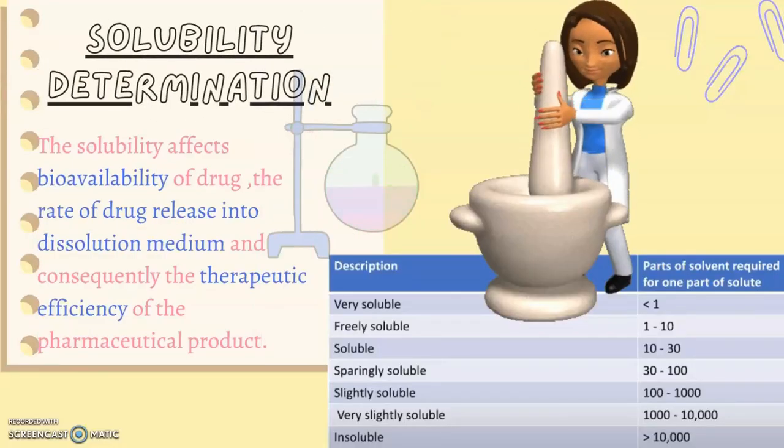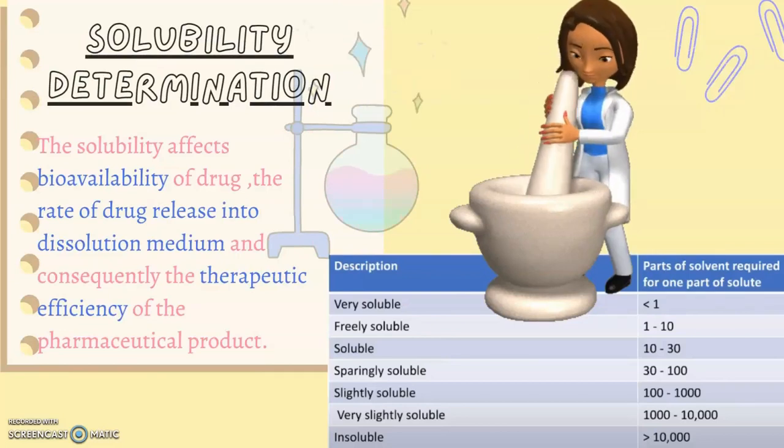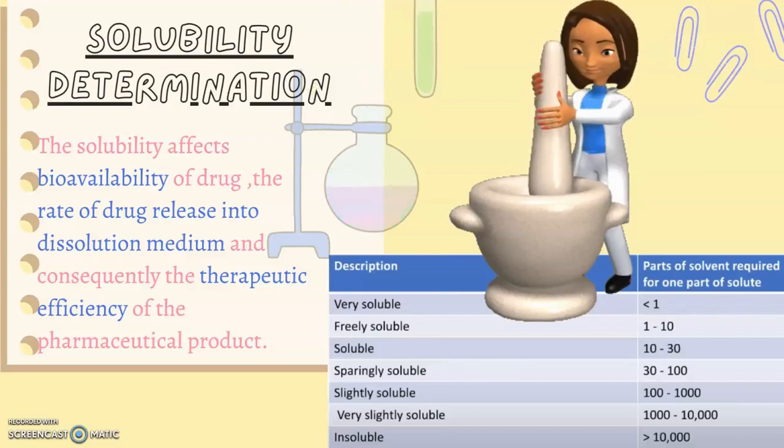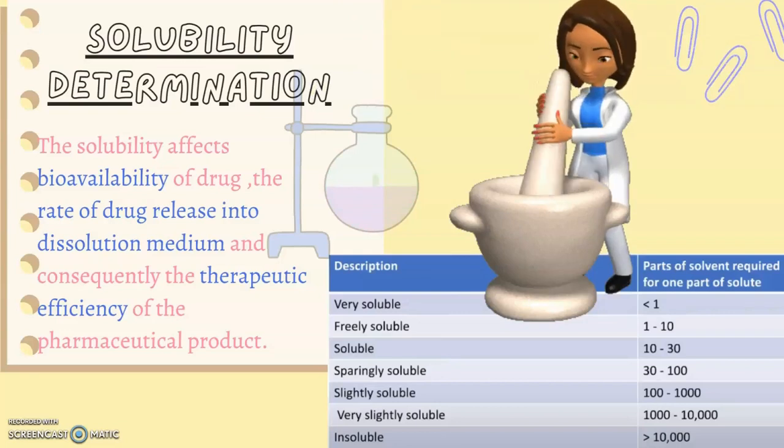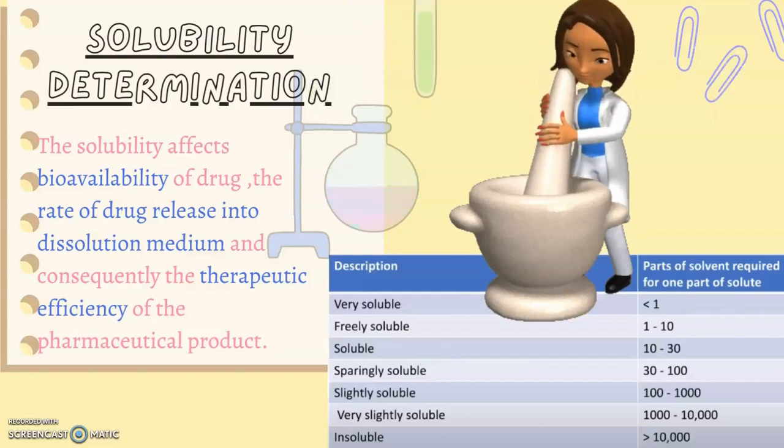We have another physical property: solubility determination. Solubility determination affects bioavailability of drug, the rate of drug release into the dissolution medium and consequently the therapeutic efficiency of the pharmaceutical product. Here is a table showing the number of parts of solvent required for one part of solute. For very soluble, parts required is less than 10. For freely soluble, parts required is 1 to 10. For soluble, the parts required is 10 to 30 and so on.